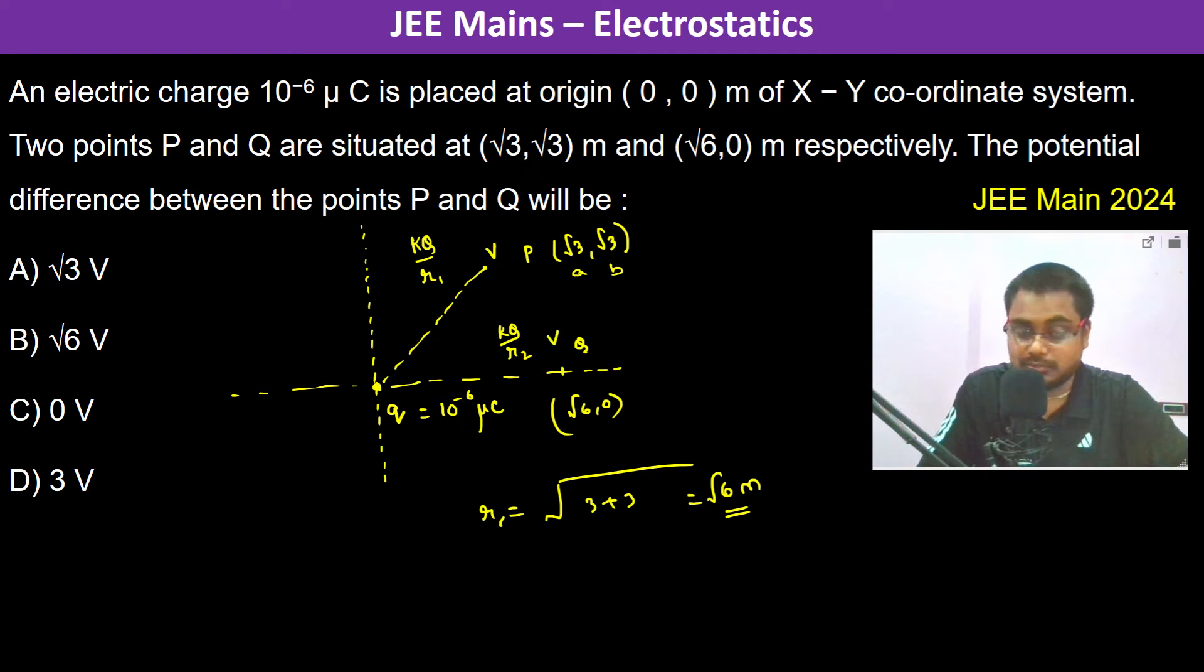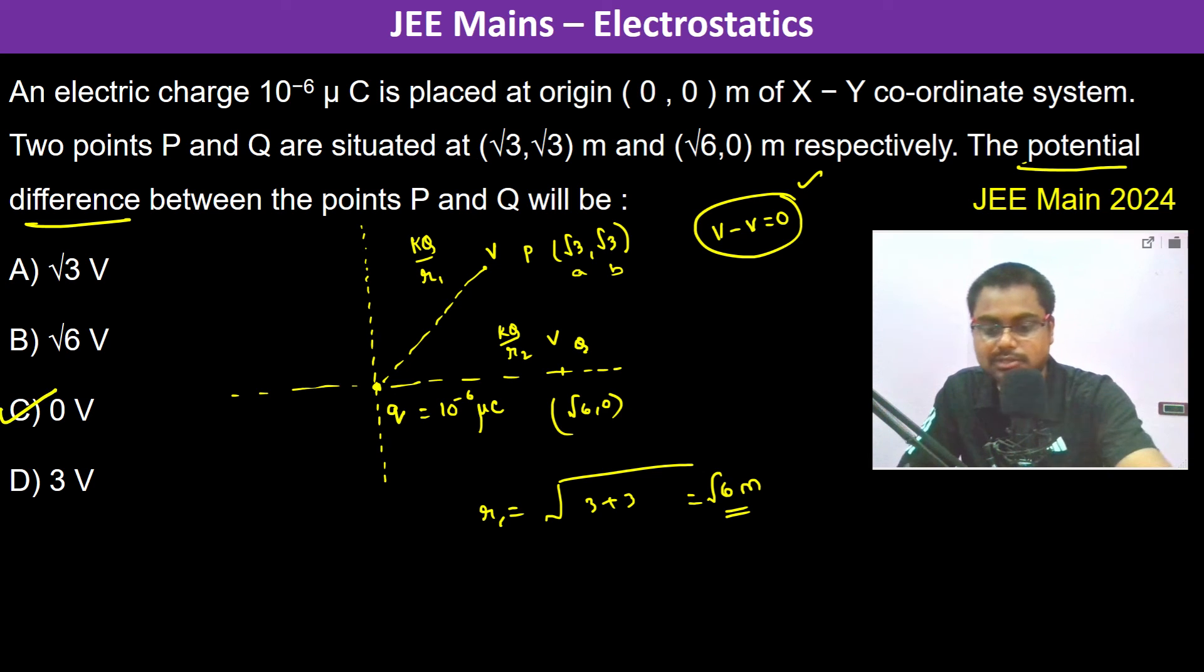If it is v here it's going to be v here also. Therefore the potential difference, because both are having the same potentials, the potential difference is zero. Therefore C is going to be the answer.